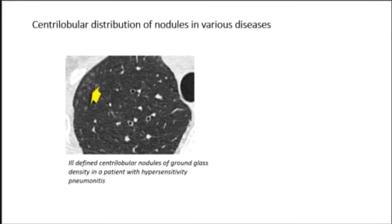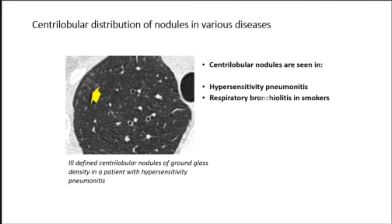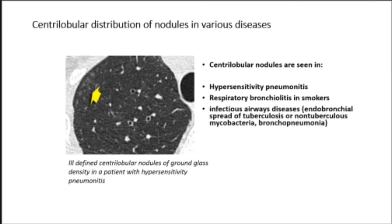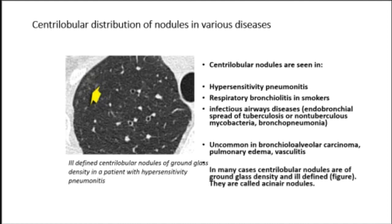Centrilobular nodules are seen in hypersensitivity pneumonitis, respiratory bronchiolitis in smokers, infectious airway diseases, endobronchial spread of tuberculosis or non-tuberculous mycobacteria, bronchopneumonia, and less commonly in bronchioloalveolar carcinoma, pulmonary edema, and vasculitis. In many cases, centrilobular nodules are of ground glass density and ill-defined — they are called acinar or air nodules.